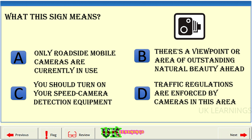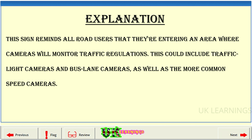What does this sign mean? A: only roadside mobile cameras are currently in use. B: there's a viewpoint or area of outstanding natural beauty ahead. C: you should turn on your speed camera detection equipment. D: traffic regulations are enforced by cameras in this area. The correct answer is D: traffic regulations are enforced by cameras in this area. Explanation. This sign reminds all road users that they're entering an area where cameras will monitor traffic regulations. This could include traffic light cameras and bus lane cameras, as well as the more common speed cameras.